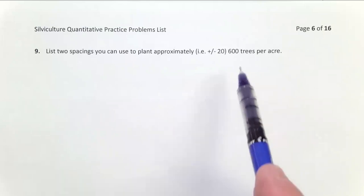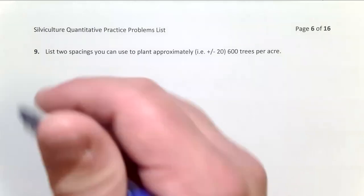In problem nine, we have a targeted density we want to plant our stand at, 600 trees per acre, and we need to know some spacings that'll work for that. So this is kind of working backwards from what we did in problem number eight. So here I'll start with kind of a similar process mathematically.